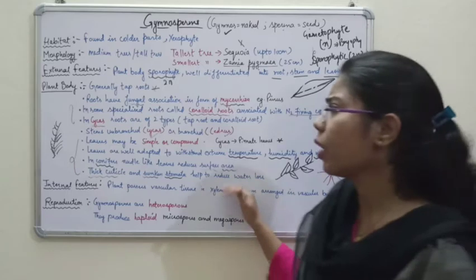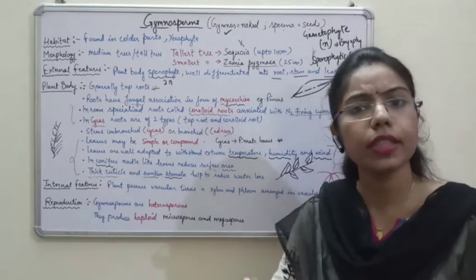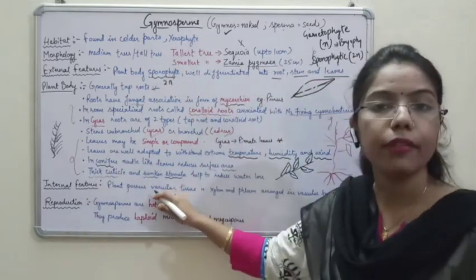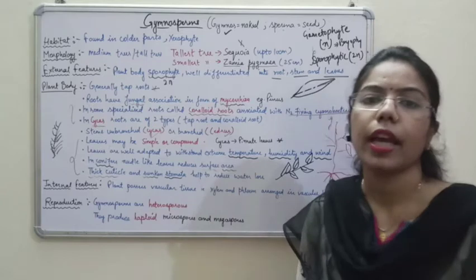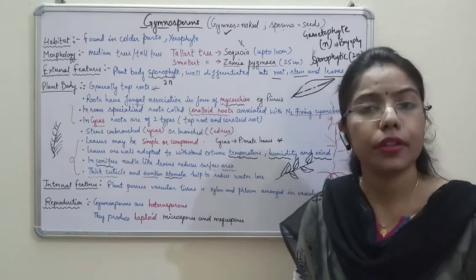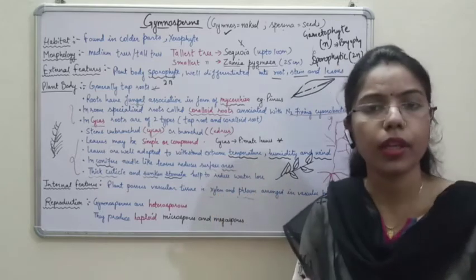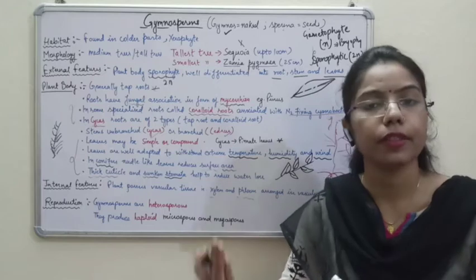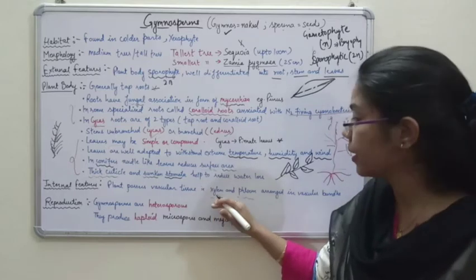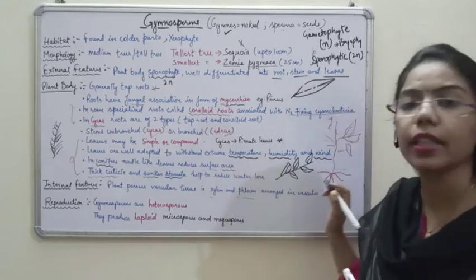Now we will talk about the internal features. The internal feature of gymnosperms is that they have a proper vascular tissue system, which allows them to conduct water, food, and minerals properly throughout the plant. For that, there is xylem and phloem. These xylem and phloem are arranged in a proper way within the vascular bundles.